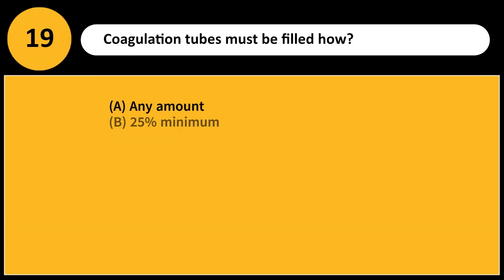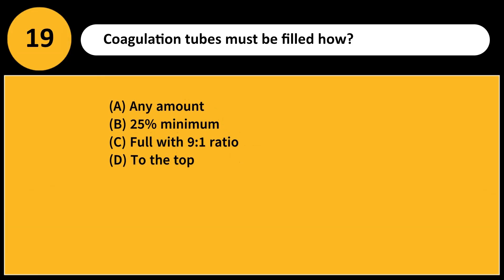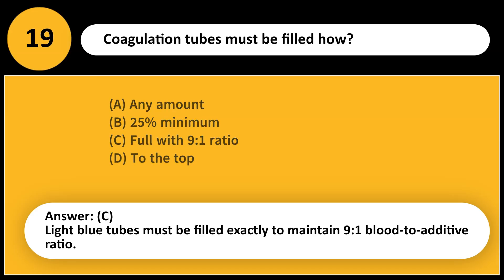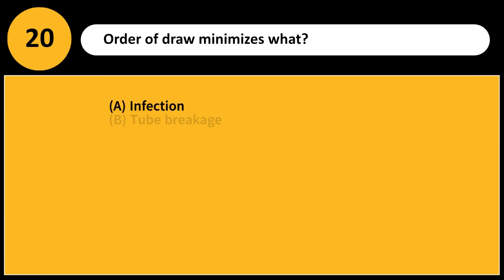Coagulation tubes must be filled how? A. Any amount. B. 25% minimum. C. Full with 9 to 1 ratio. D. To the top. Answer: C. Light blue tubes must be filled exactly to maintain a 9-to-1 blood-to-additive ratio.